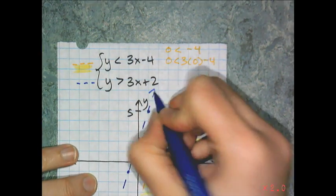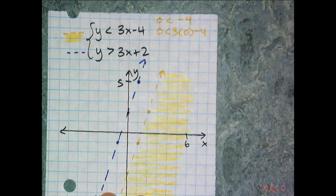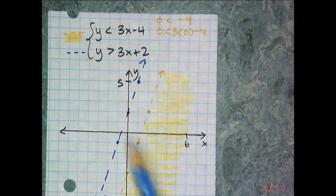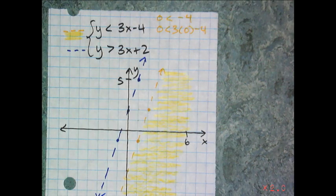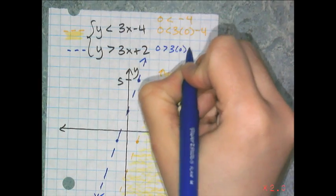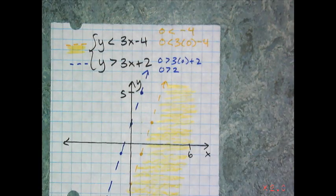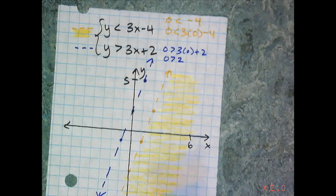And now I have to decide if it's shade above or shade below. And so I'm going to test a point, I can test 0, 0 again. And if I test 0, 0, I get 0 is greater than 3 times 0 plus 2, or 0 is greater than 2, which is false. So that means I'm going to shade this one above.